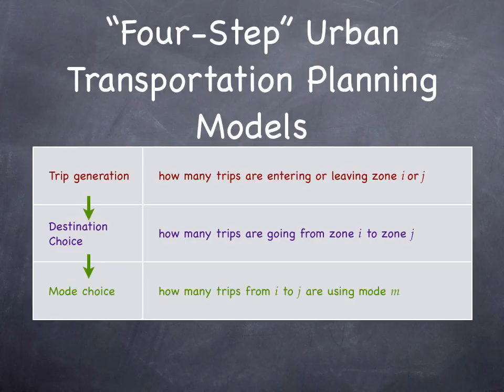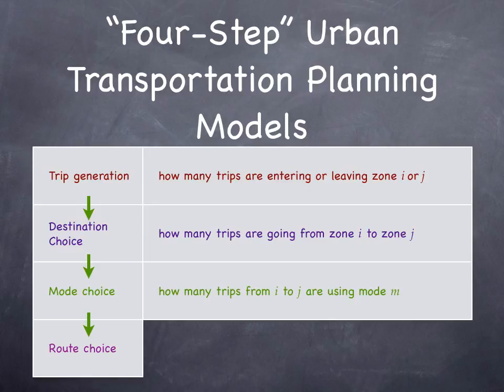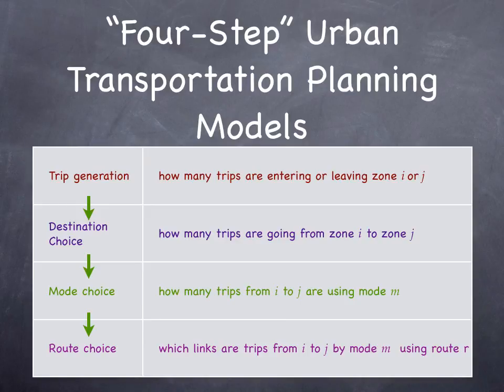Then we might have mode choice: how many trips are going from I to J using mode M? Sometimes we solve mode choice before destination choice — figuring out the probability of using mode M if you're going from I to J, then figuring out how many trips are going from I to J. They can be done in parallel; the sequence isn't that important as long as you're internally consistent. You use that information to develop what's called a trip table — a matrix of the number of trips going from every origin to every destination by each mode. For each particular mode, we want to solve the route choice: which links are you going to use when going from I to J by mode M?